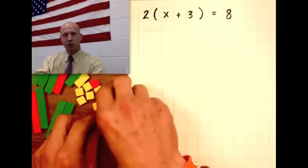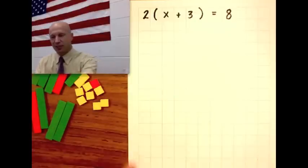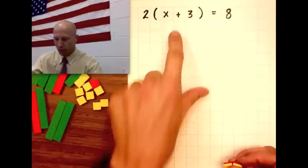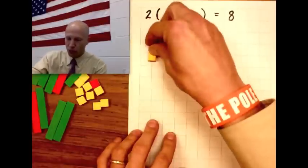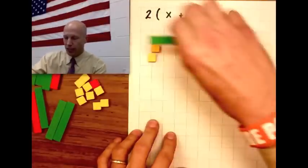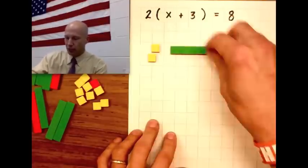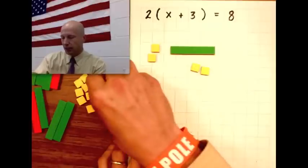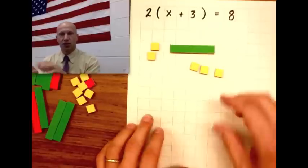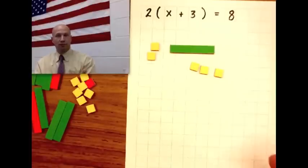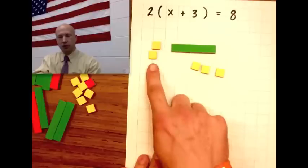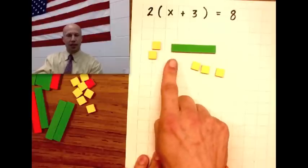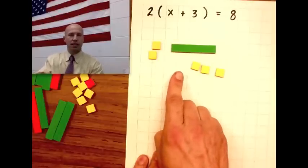Now, here's what seventh graders love to do. They say this is two times, so they start with two times x plus three — and this is not correct. Don't do this. This two right here looks like it's being added to the x plus three, and it is.